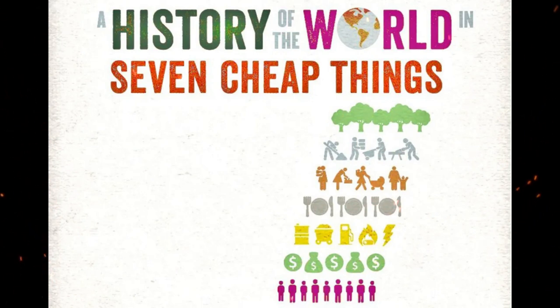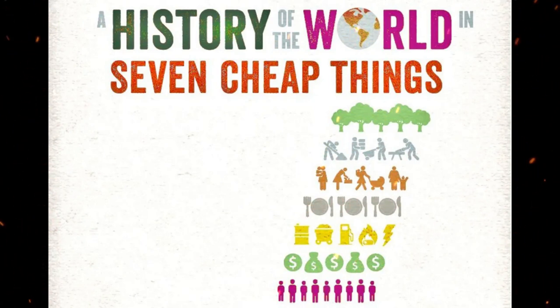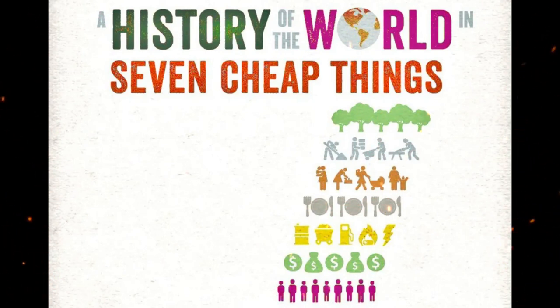Introducing the topic of cheap food, Patel and Moore make the case that the true symbol of modernity is neither the automobile nor the smartphone but the chicken McNugget. These morsels of cheap food are a product of the cheapness of the other six things.